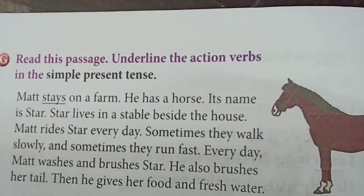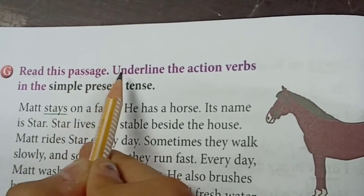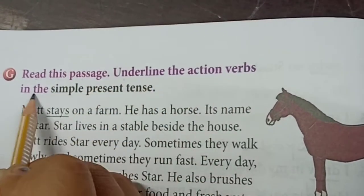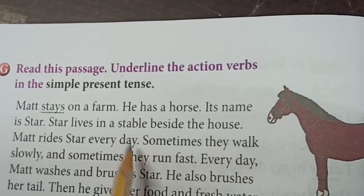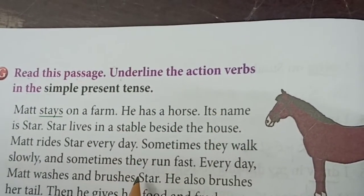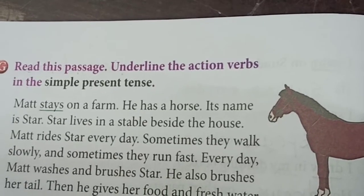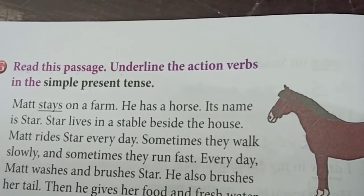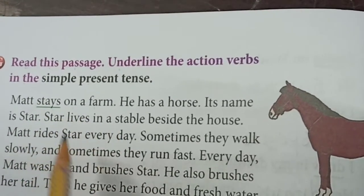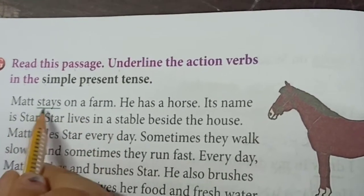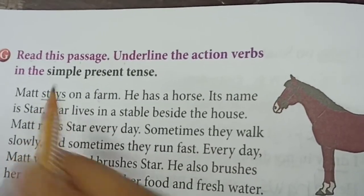Now moving to the next exercise. Read this passage and underline the action verbs in the simple present tense. Let's start. 'Matt stays on a farm.' Here 'stays' is underlined because it shows an action.